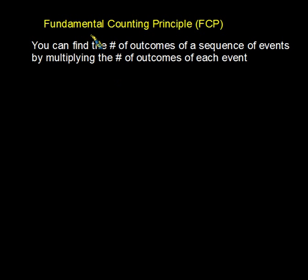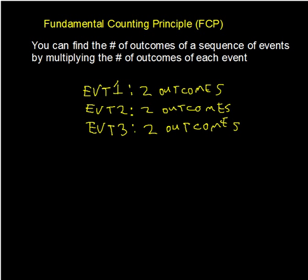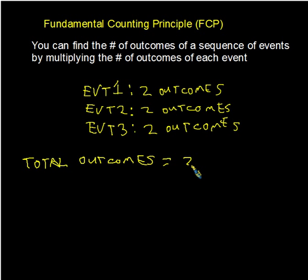If we have a really large number of events and outcomes, we don't want to make a big tree for that. Instead, we're going to look at something called the Fundamental Counting Principle. The Fundamental Counting Principle says you can find the number of outcomes of a sequence of events by multiplying the number of outcomes of each event. Let's take a look at our example for flipping three coins. We determined there were three events and each event had two outcomes. The total number of outcomes equals the number of ways event one could occur times event two times event three — and the answer is eight.